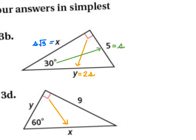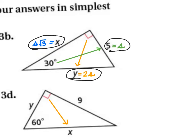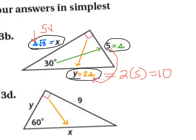For 3B, opposite the 30° is S, opposite the 60° is S√3, and opposite the 90° is 2S. This time S is given — the easiest case. S = 5, so Y = 2 · 5 = 10 and X = 5√3.